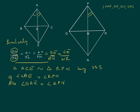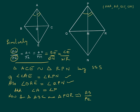We also had angle BAE equal to angle QPN. On adding angle BAE and angle CAE, we get angle A equal to angle P. So now in triangle ABC and triangle PQR, we are given two sides proportional: AB/PQ = AC/PR, and angle A equal to angle P. This implies that triangle ABC is similar to triangle PQR by SAS.